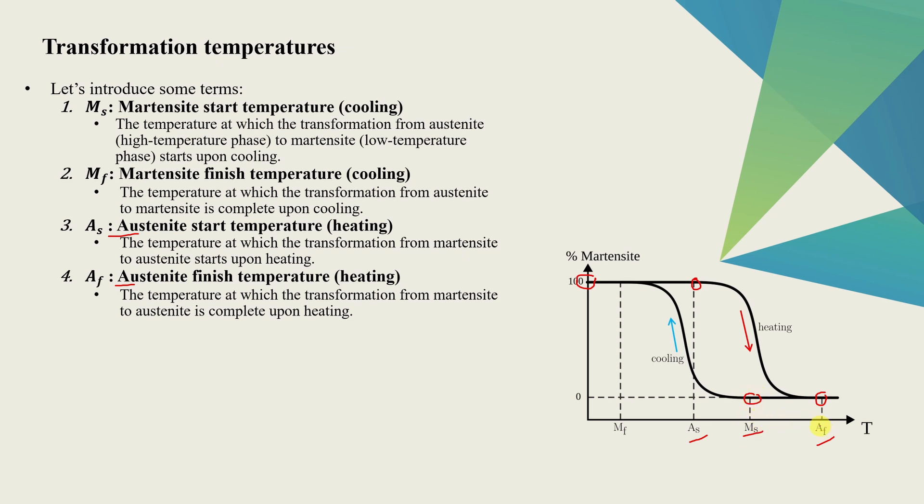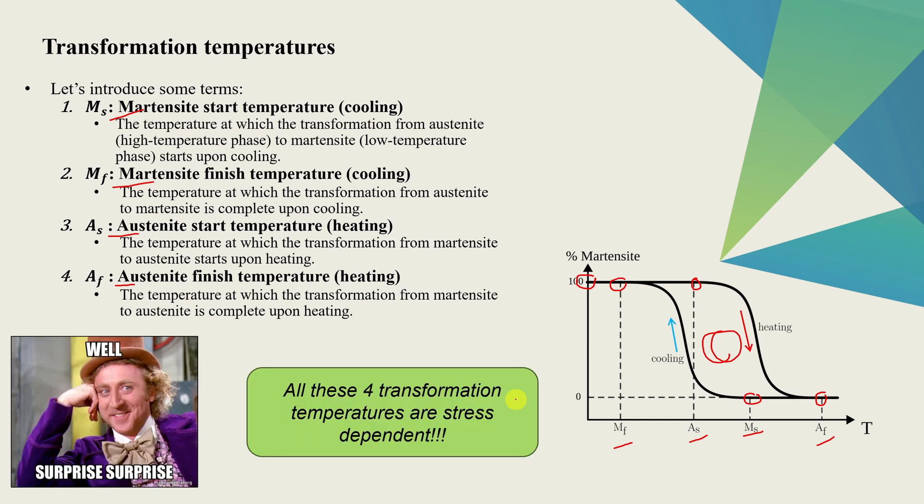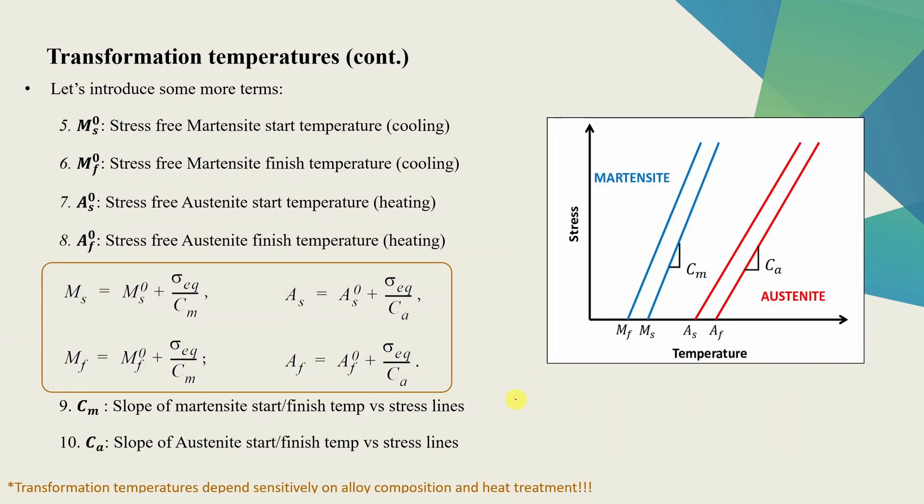But instead of that, it starts converting to martensite at temperature Ms over here. And this Ms is always lower than Af. And if we keep cooling, finally at temperature over here which is denoted by Mf, all of the austenite is now transferred into martensite. And these two temperatures are known as martensite start temperature and martensite finish temperature. And here as well, Mf will be lower than As. And because of this phenomena, we will see some hysteresis loop over here. These four temperatures are very important for any SMA.